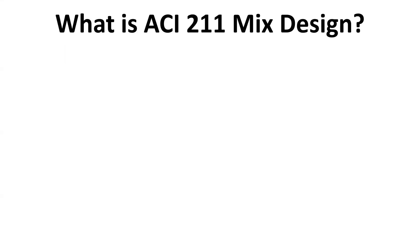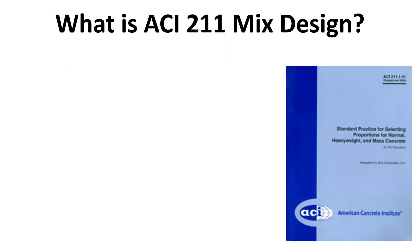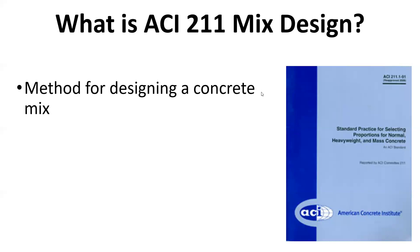What is the ACI-211 Mixed Design Method? This is a document published by the American Concrete Institute that covers standard practices for selecting proportions for normal, heavy, and mass concrete. This will be updated again soon — I'm actually part of this committee — but right now I'm going to talk about the 1991 version that was approved and has been used for many years.